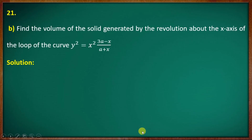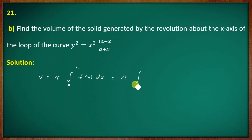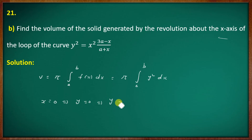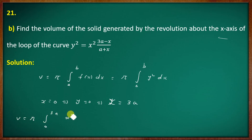Now for the b question: find the volume of the solid generated by revolving about the x-axis. The curve is y squared equal to x squared times 3a minus x divided by a plus x. The limits go from x equals 0 to x equals 3a. Setting up, the integration is the integral from 0 to 3a of x squared times 3a minus x divided by a plus x, dx.